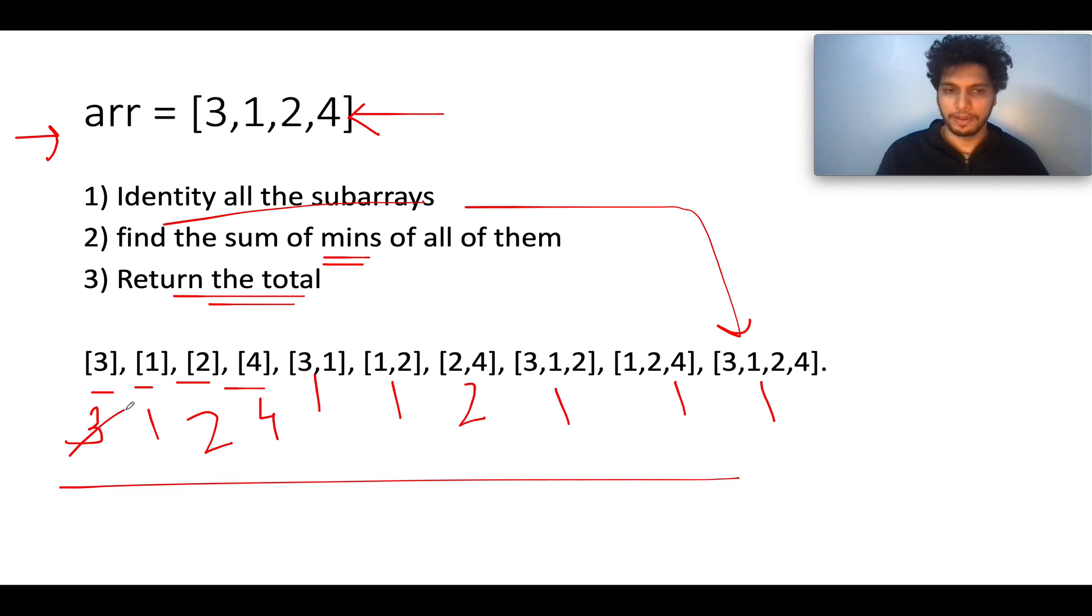Now we need to sum these up. 1 plus 3, 3 plus 1 is 4, 4 plus 2 is 6, 6 plus 4 is 10, 11, 12, 14, 15, 16, 17. 17 is the answer. This is what the question is asking us to return.